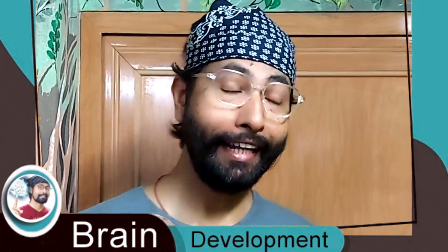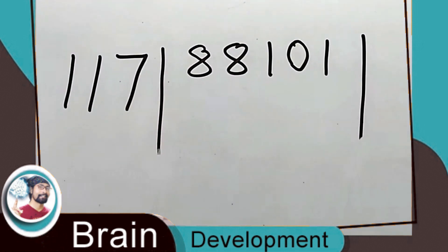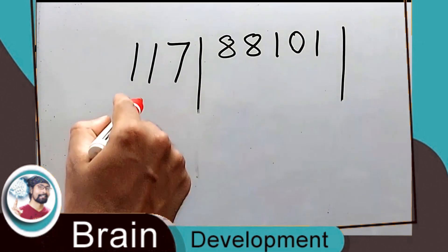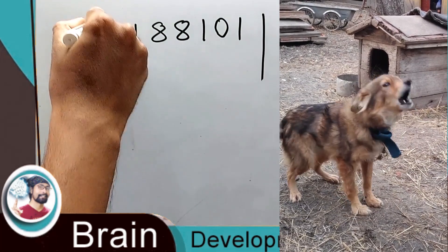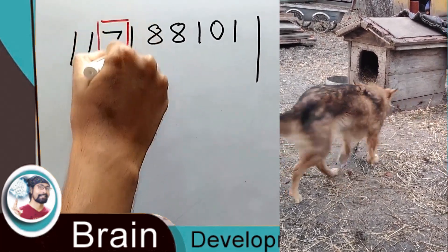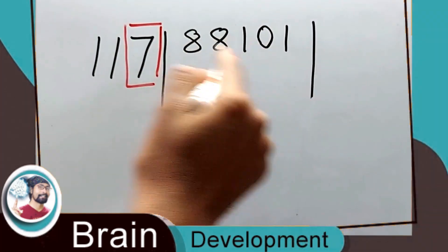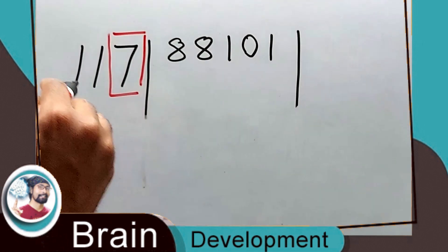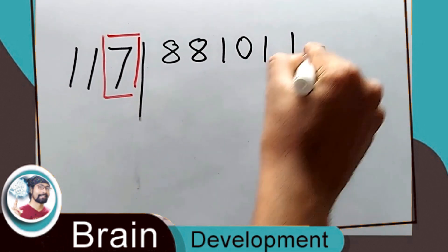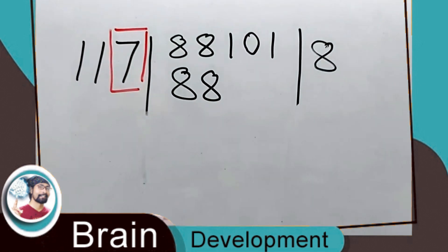Let's get into more complicated numbers. Let's divide 88101 by 117. Yes, it is possible to divide with a three-digit divisor — the process is the same. The third number, 7, will be separated, and we'll divide 88101 by 11. Eleven eights are 88 — simple process.